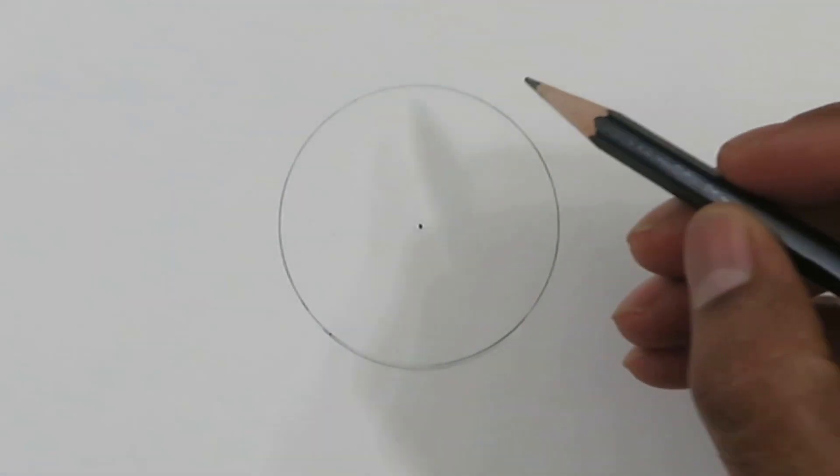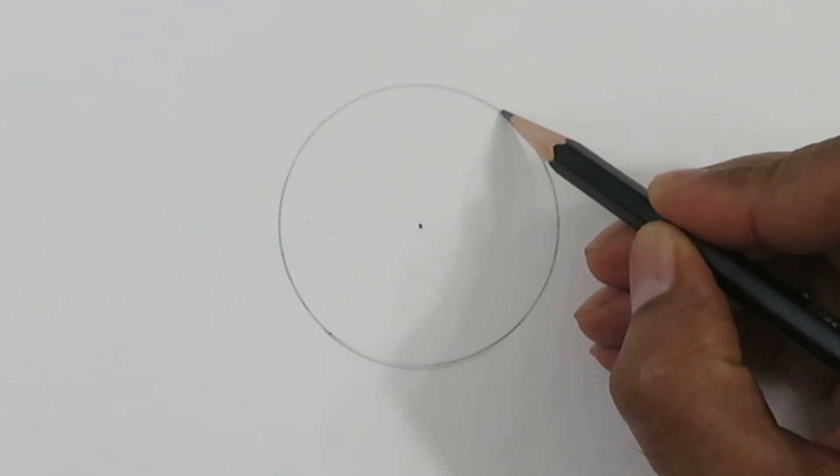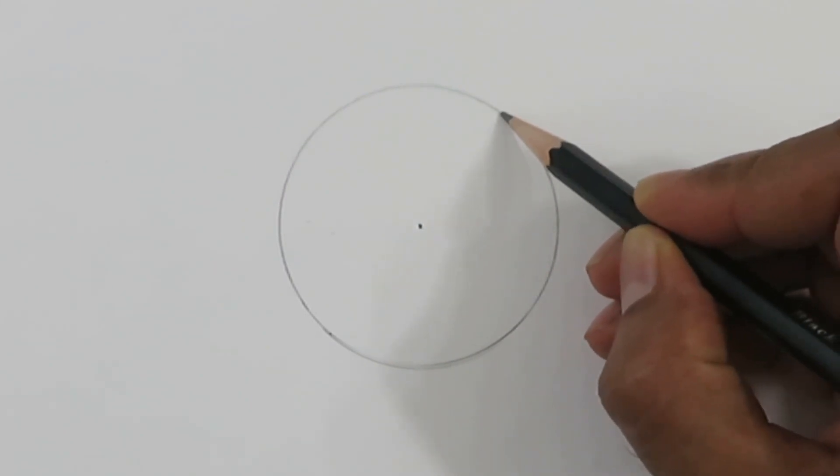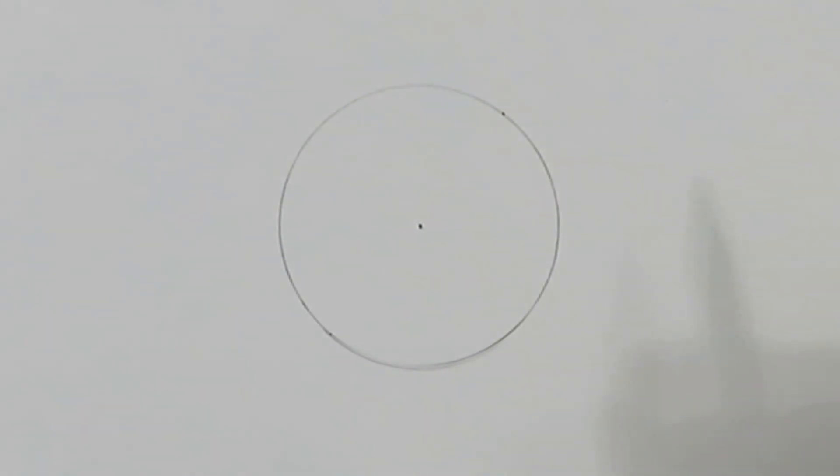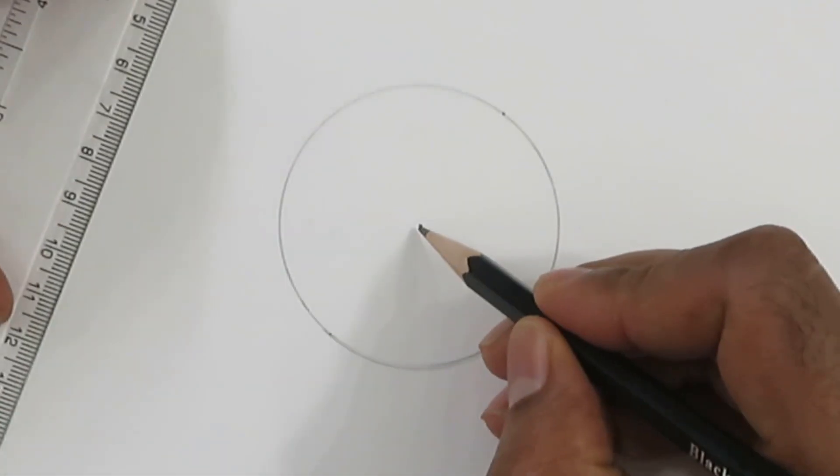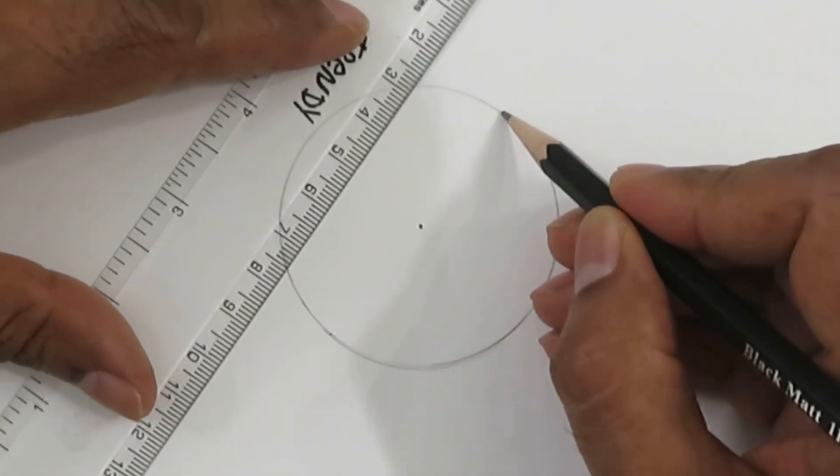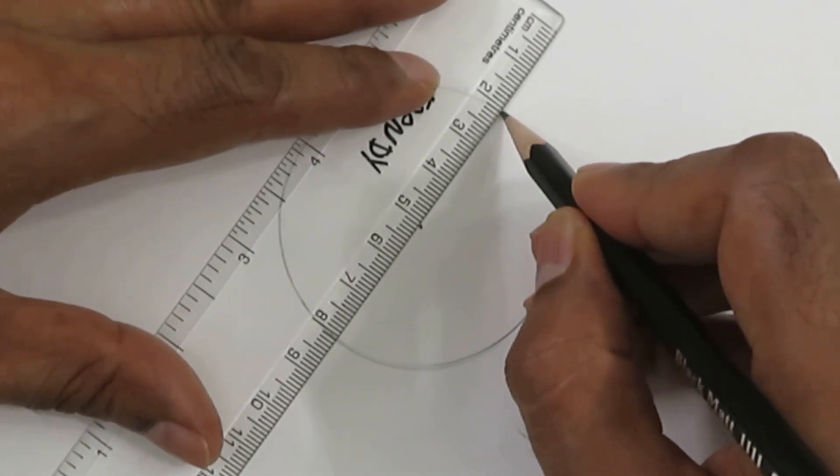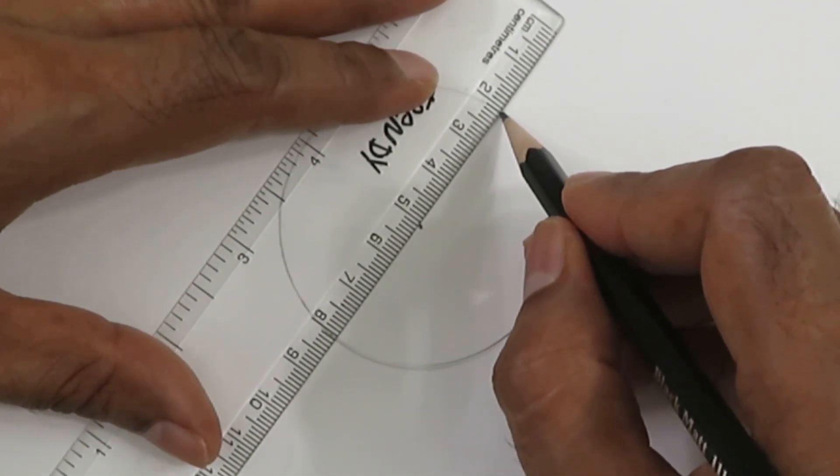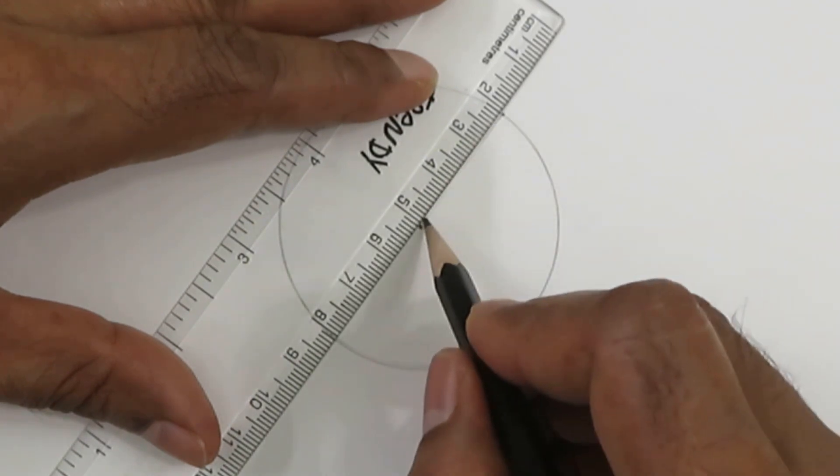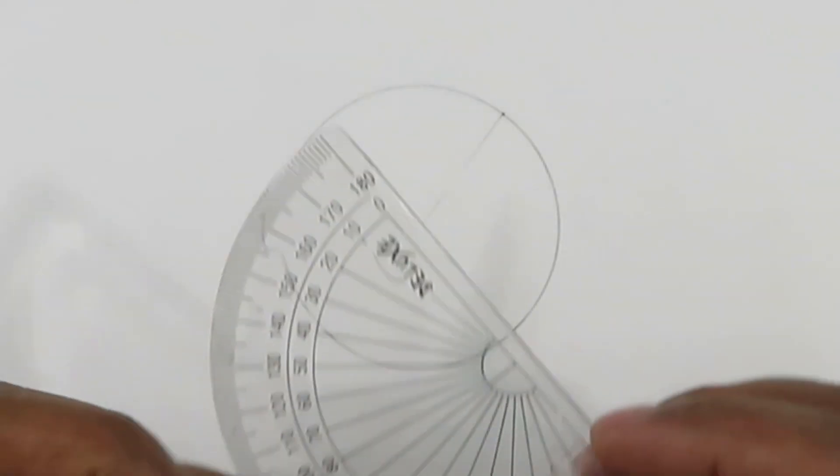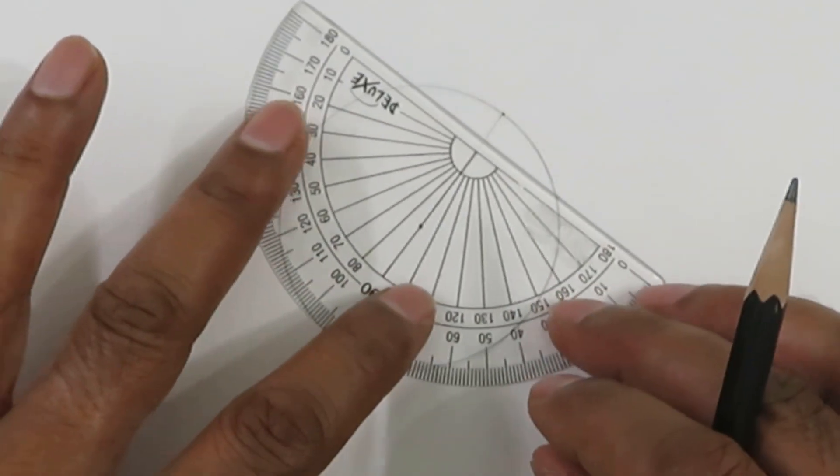This is the circle. If I want to draw a tangent at this point, all I have to do is—we need to know the center. You can join this point where you want to draw the tangent with the center, and very simply you can use this protractor.